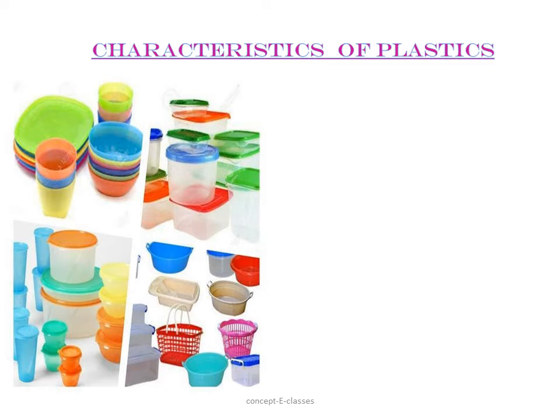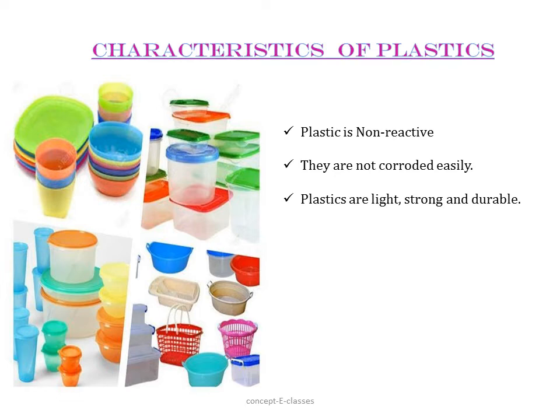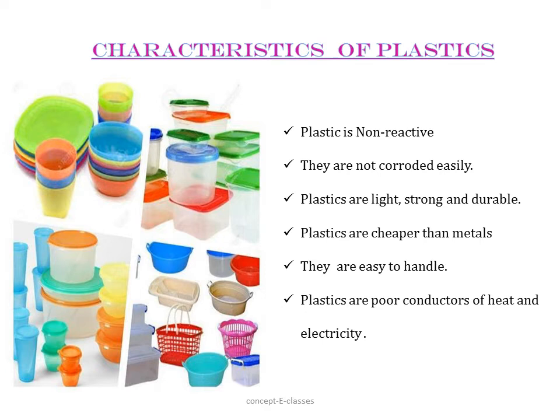The characteristics of plastics include: plastics are non-reactive — unlike metals such as iron, they do not react with water or air and are not corroded easily, so they are used to store various materials including chemicals. Plastics are light, strong, and durable, which is why most household articles are made of plastic. Plastics are cheaper than metals and easy to handle. Plastics are poor conductors of heat and electricity, which is why electrical wires have plastic covering and handles of screwdrivers and frying pans are made of plastic.